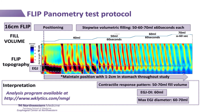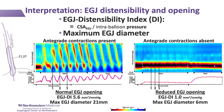While FLIP can generally be interpreted via the real-time planometry display, the study can also be saved for future review, and an analysis program we've developed is available for free download at the website listed. The FLIP evaluation of EGJ opening utilizes the EGJ distensibility index, or EGJ DI, calculated as the cross-sectional area divided by pressure.